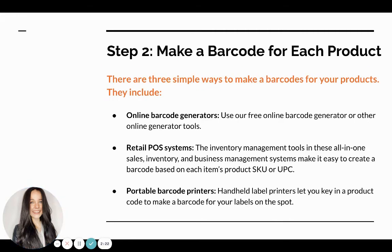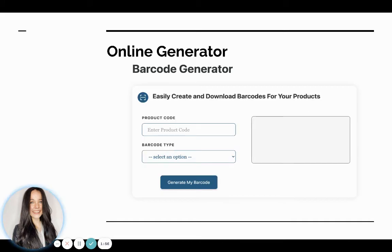Step two is making a barcode for each product. Once your product codes are generated and put into your point of sale system or other inventory management system, you have three options for creating your barcodes. You can use an online generating tool — we have one at the top of this article that's very easy to use. You just enter your product codes, select the type of barcode, which will depend on your point of sale system and scanner, then generate and it will create a barcode for you.